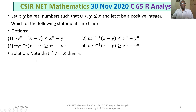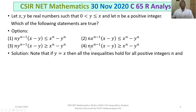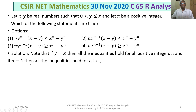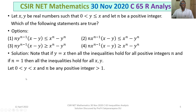We make some observations. Note that if y = x, all the inequalities hold for all positive integers n. Further, if n = 1, then putting n = 1 in all these inequalities, all the inequalities hold for all x, y. In light of this observation, we now consider 0 < y < x and n be any positive integer greater than 1.